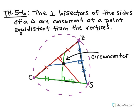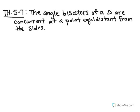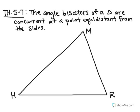Let's take a look at another kind of special point of concurrency. Here's our next theorem: theorem 5-7. It says the angle bisectors of a triangle are concurrent at a point equidistant from the sides. Here's our triangle with vertices M for Mathis, R for Rebecca, and H for Hayden.